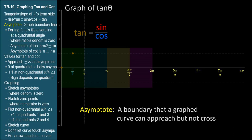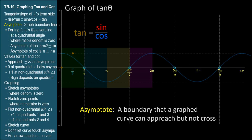It's often very helpful when graphing trig functions to start with the asymptotes. The four remaining trig functions — tangent, cotangent, secant, and cosecant — all have asymptotes because they all have sine or cosine in their denominator, and sine and cosine are zero at certain angles. So let's sketch the asymptotes for tangent, which occur where the denominator, cosine, is zero — at pi over two, the top of the unit circle, and at three pi over two, the bottom of the unit circle. Every angle coterminal with these is also an asymptote.